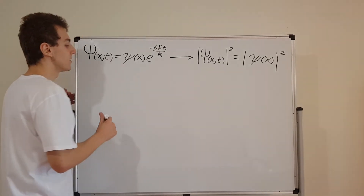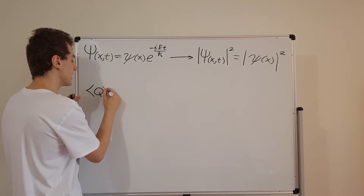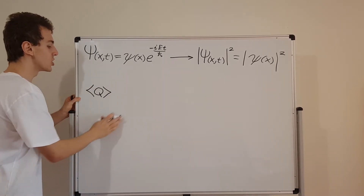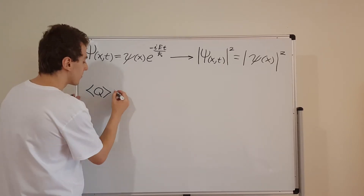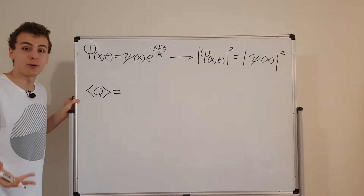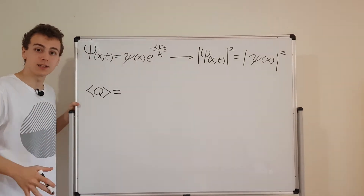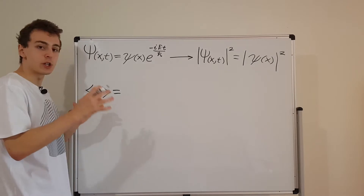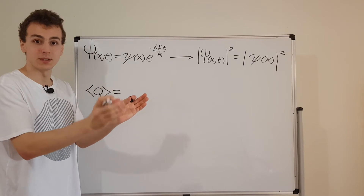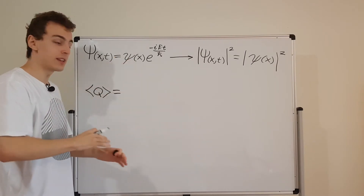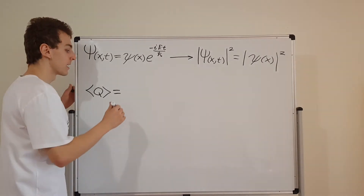So let's go ahead and define the expectation value of a quantity. Let's say q is some quantity, and this notation denotes the expectation value of q. We can define the expectation value with an integral sandwich, as discussed in previous videos in the quantum mechanics playlist. You sandwich an operator representing an observable between psi star and psi, then integrate over the entire domain, and that gives you the expectation value.